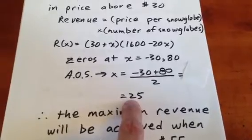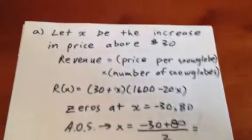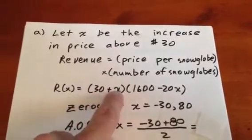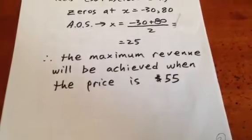So since the maximum revenue occurs when the X value is 25, that means the price per snow globe should be 55. So the maximum revenue will be achieved when the price is $55.